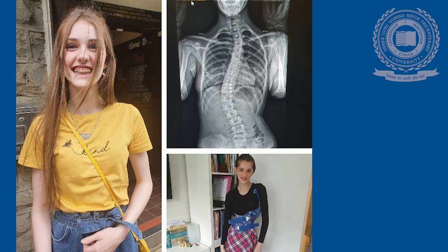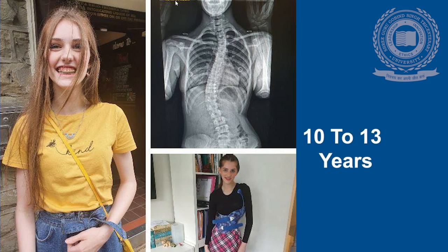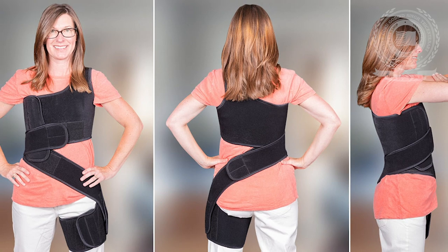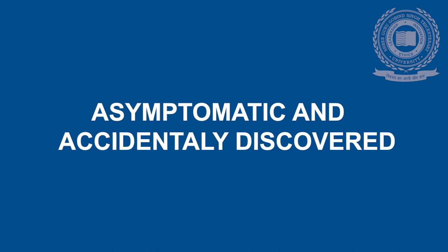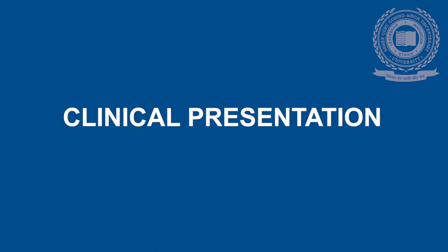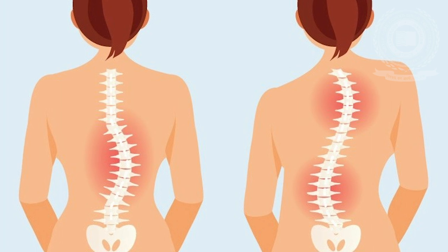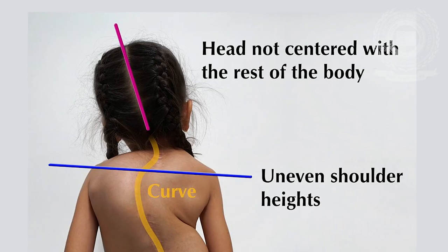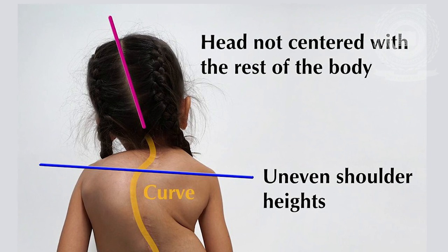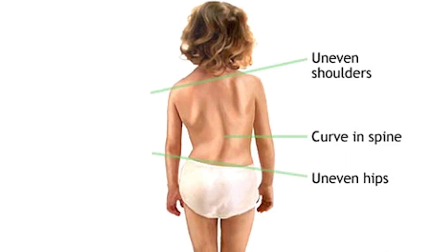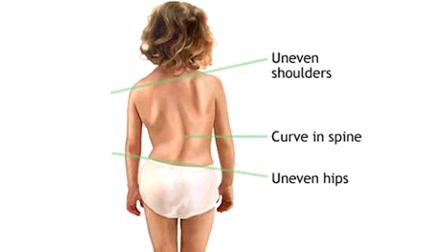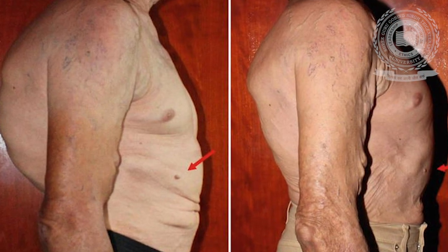Clinical features. Clinically, it is seen between the ages of 10 to 13 years and is more commonly seen in females. Usually it is asymptomatic and accidentally discovered. The clinical presentation includes lateral curves of the spine to the right or left, head displacement to the side it curves, decreased forward flexion and lateral flexion, asymmetrical shoulders, asymmetrical pelvis, and a rib hump on the convex side.